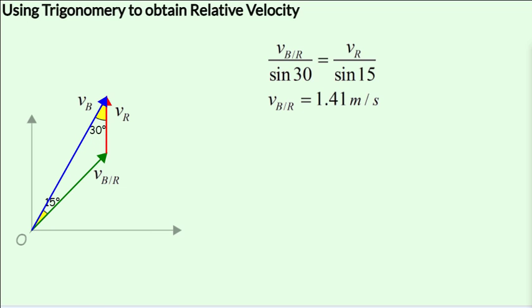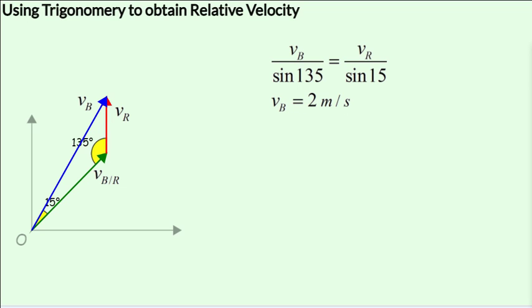Now let's compute V_B, the velocity of the blue ball, with respect to the ground. Again, we use the law of sines, and we get V_B over the sine of its opposite angle, that is, sine of 135, is equal to V_R over the sine of its opposite angle, which is sine of 15.